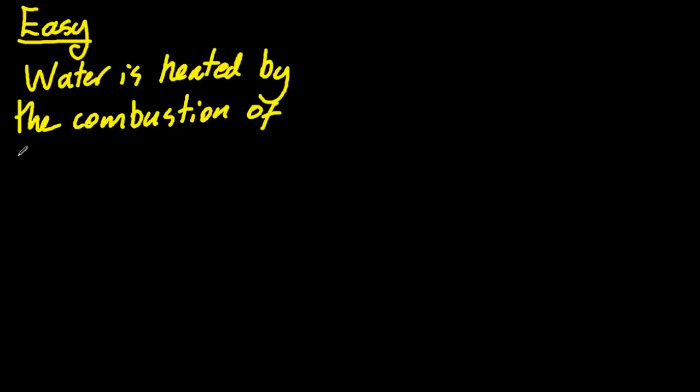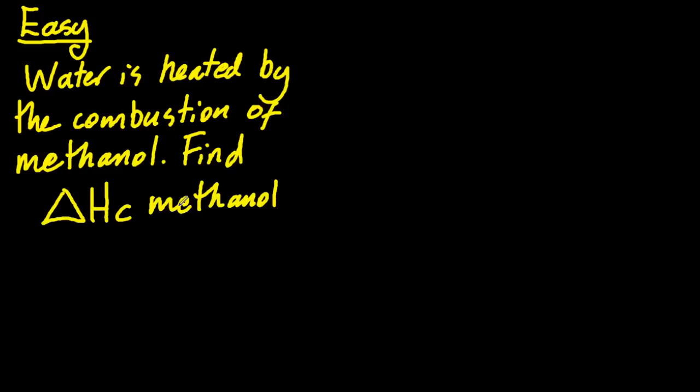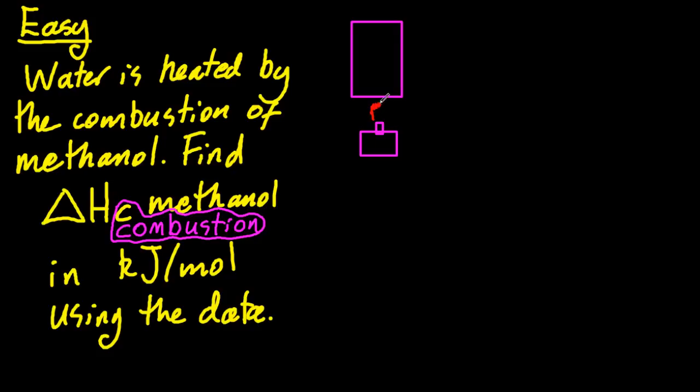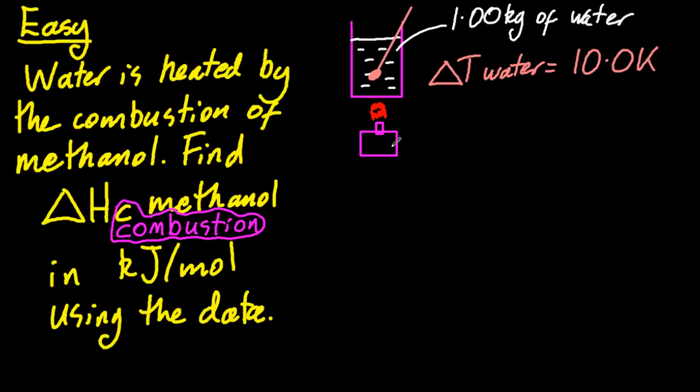Well, let's look at an easy one first, but I'll throw a few tricks in, maybe as well. So water's heated by the combustion of methanol. Find delta Hc for methanol in kilojoules per mole. And here's some data. Well, first let me draw the experimental setup. Oh, no. C is combustion, so that's burning in oxygen. Delta Hc. So the setup is a little burner with my calorimeter above. A known mass of water in the calorimeter. A thermometer to measure the temperature change of the water. And fuel, let's say methanol.